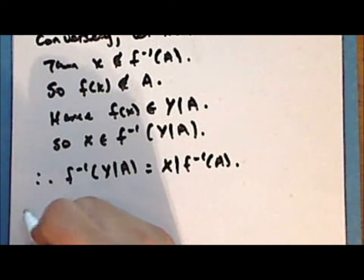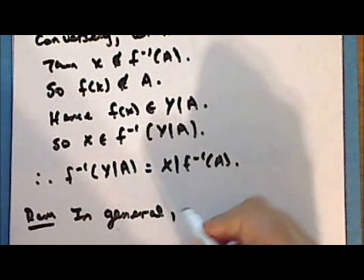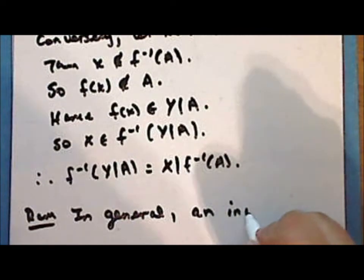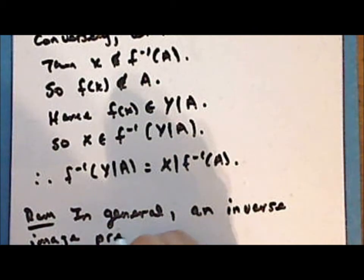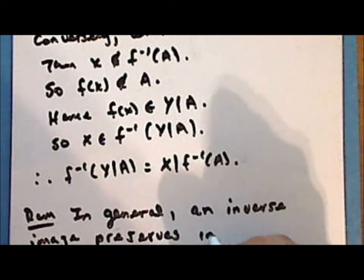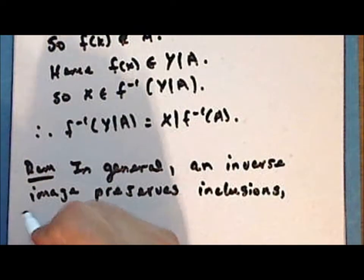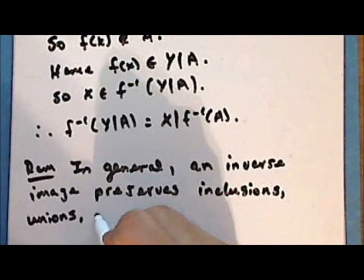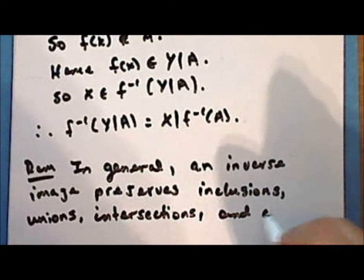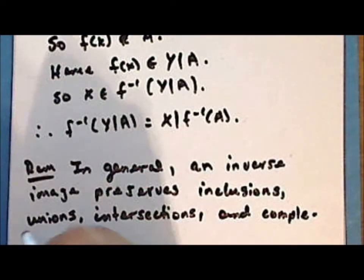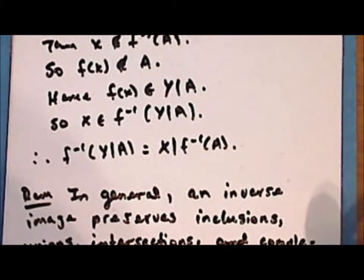So in general, an inverse image preserves inclusions, unions, intersections, and complements. And this makes an inverse image a much more powerful tool than a direct image.